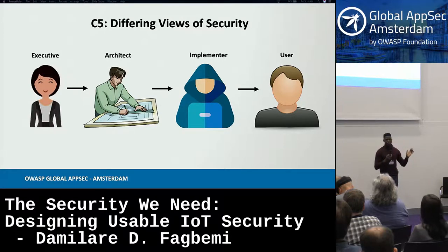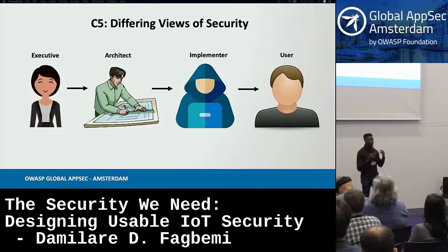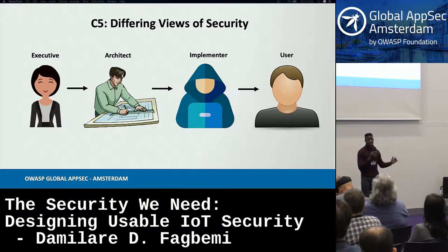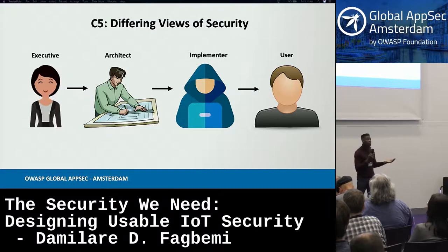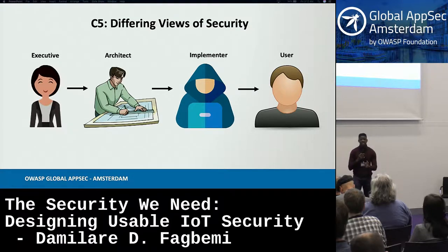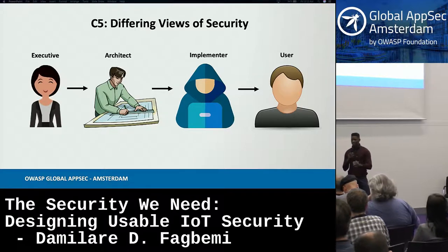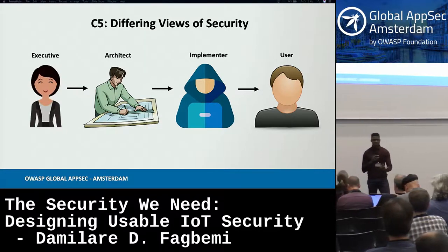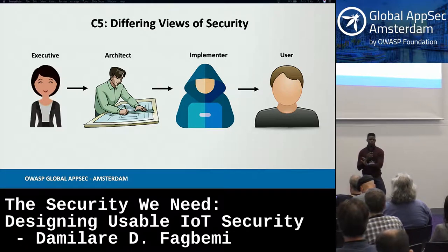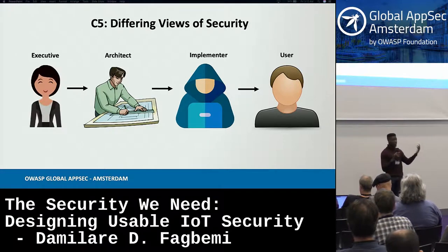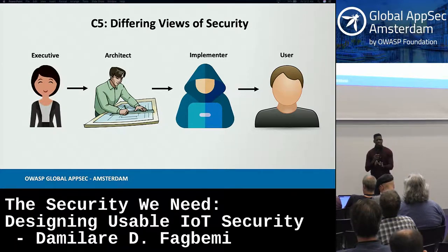The fifth C: from executives through to the user, there are different views of security. Executives have a vision around talent and customer needs to produce a product. Architects design through that vision to release the product. Engineers partner with architects to bring that design to reality. And users have to use the product. The challenge for security professionals is to harmonize security across all these different views.